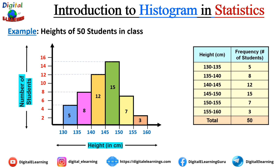What do you interpret from this graph? The height of each bar corresponds to the frequency of that particular class interval. The tallest bar represents the range 145 to 150, which has the maximum number of students — 15 — making it the most common height range. The shortest bar represents 155 to 160, with only 3 students, indicating very few tall students. These examples help us visualize how data is distributed across intervals, making it easier to identify patterns and trends.